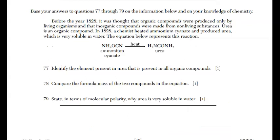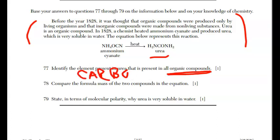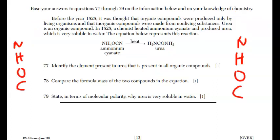Checking out 77 through 79. Reading passage, equation 77. Identify the element present in urea that is present in all organic compounds. What makes organic compounds organic is the element carbon. It's a fact. It goes up a lot on the test. Don't forget that. For 78, it says compare the formula mass of the two compounds in the equation.